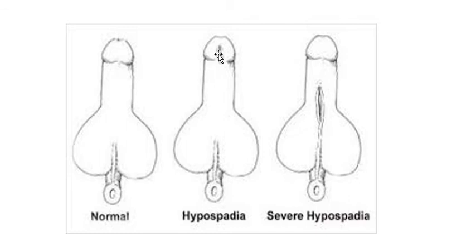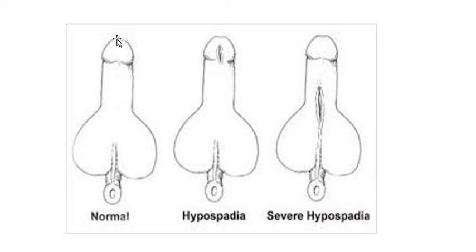This is the external meatus — it should have been at the tip, but it is not there. This is a distal penile hypospadias, or a glandular type variety. And this is the severe type of hypospadias. The external meatus normally should be at the tip, but in this case it is at the penoscrotal junction — this is a severe type of hypospadias.